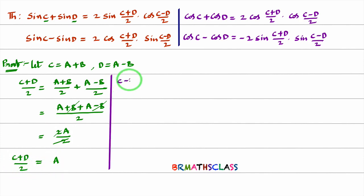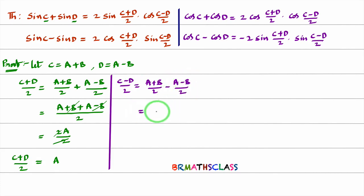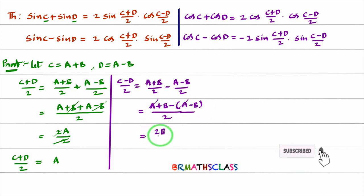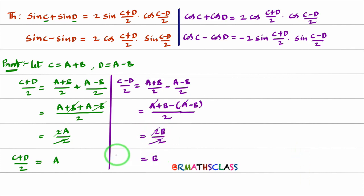Now I will calculate (C−D)/2. C is A+B, D is A−B, so the expression becomes (A+B)/2 minus (A−B)/2. Taking LCM 2, the numerator is A+B minus (A−B). The A terms cancel, and minus of minus becomes plus, giving B+B = 2B. So 2B divided by 2 equals B. Therefore (C−D)/2 = B.